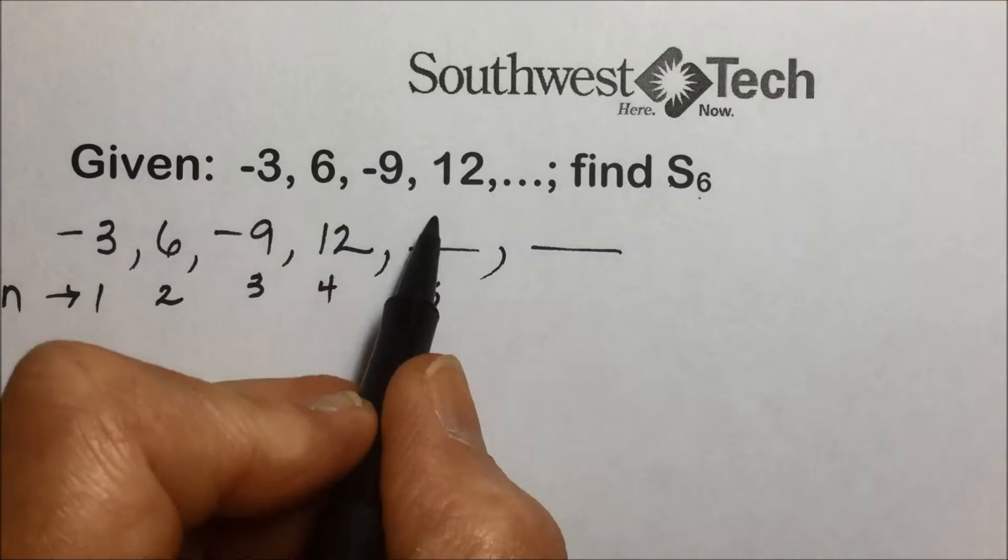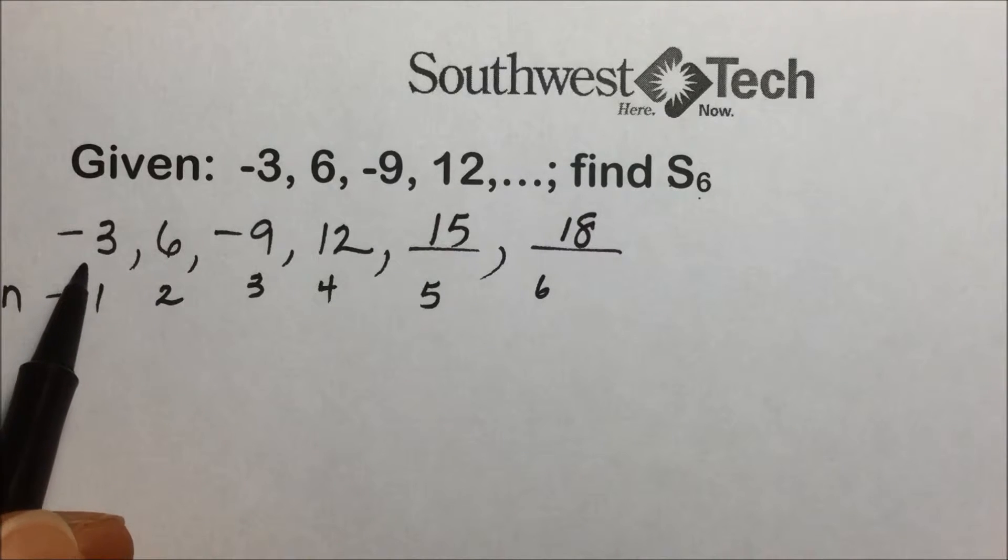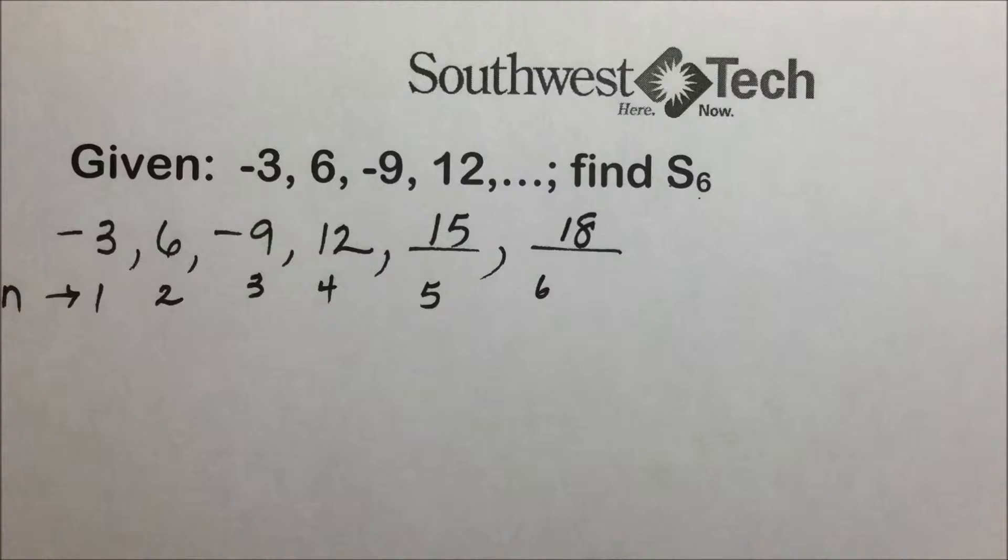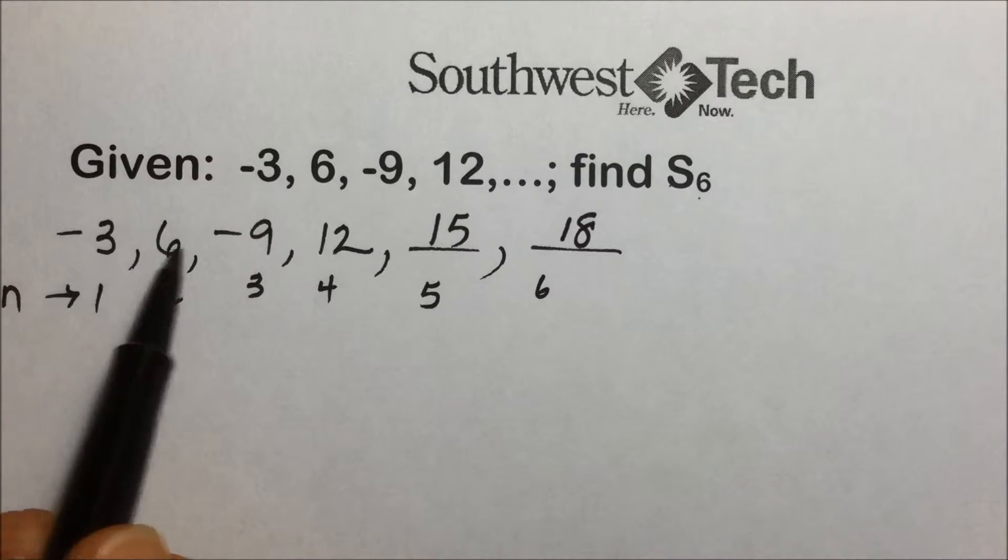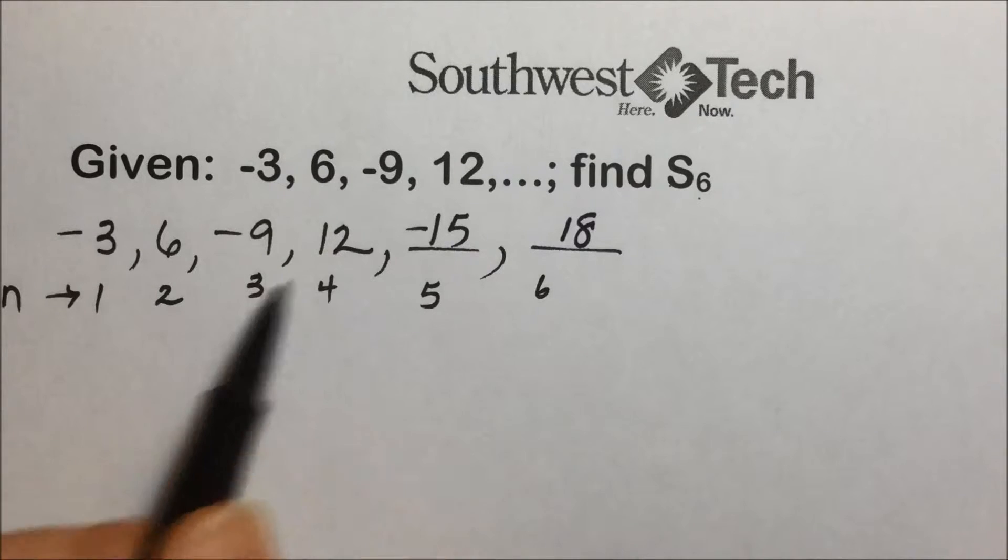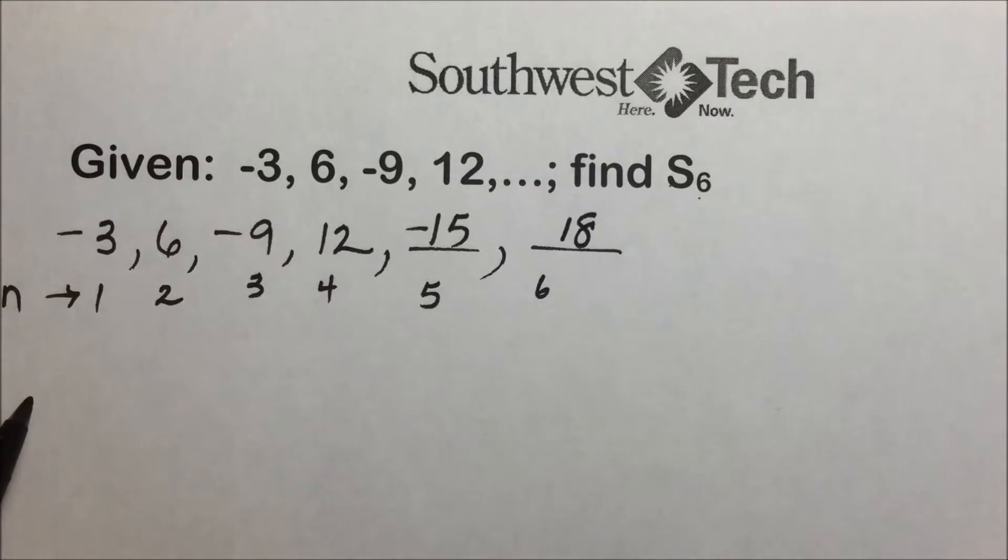So that 5 times 3 would be 15. 6 times 3 is 18. And then to deal with the sign, if we were generating the general term, we would have to deal with alternating signs. And in this case, our odd powers are having the negatives.